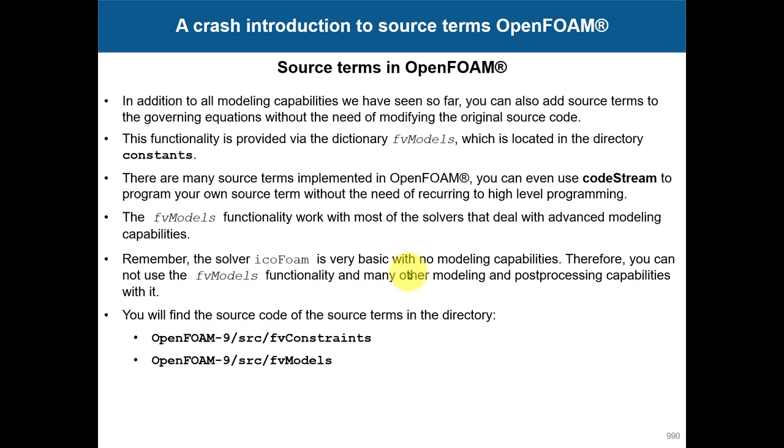You will find the source code in these directories: fvModels and fvConstraint. In the previous lecture we talked about fvConstraint, and this can be seen as a source term, but it's specifically not to add momentum, but minimum and maximum to constrain some values. It's something equivalent.